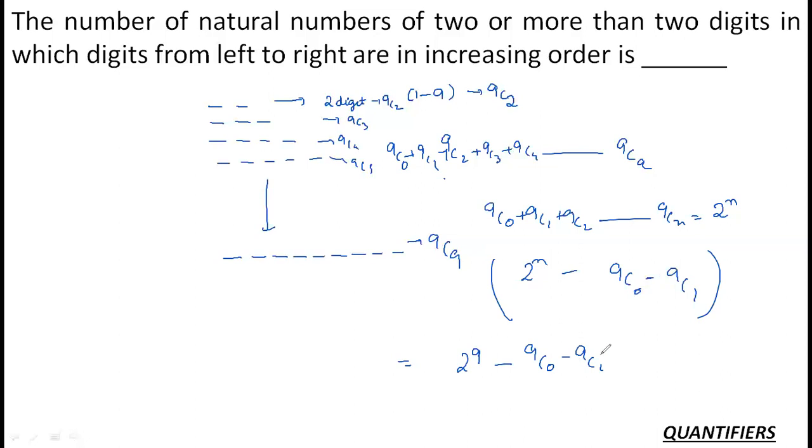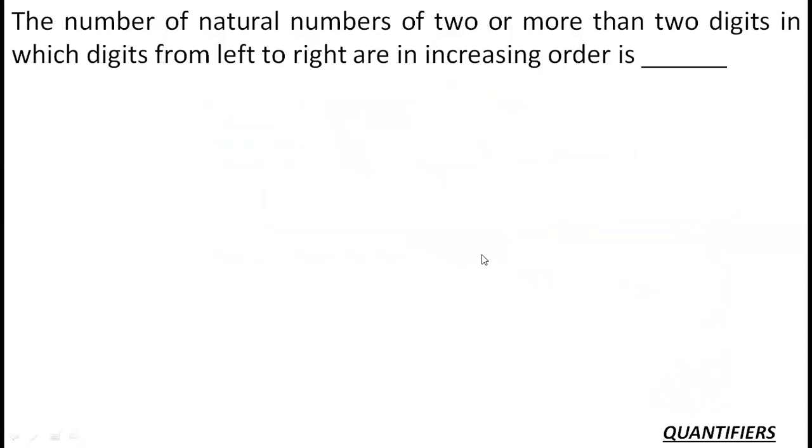Now, 2 raised to the power 9 is 512. Minus 9C0 is 1, 9C1 is 9. So the answer comes out to be 502. These are the possibilities that I have, or these are the numbers possible from two to nine digits. Now let's follow the second question.